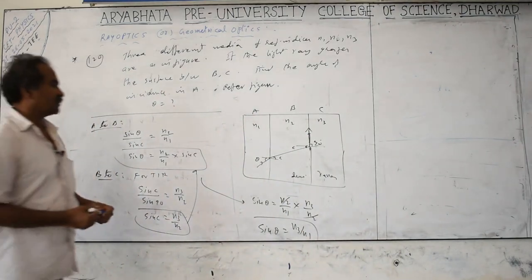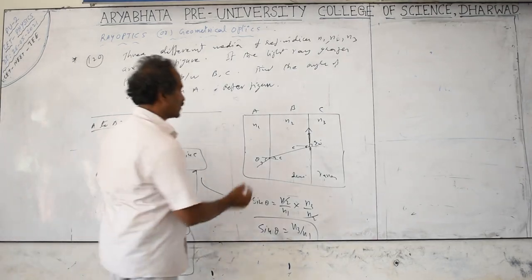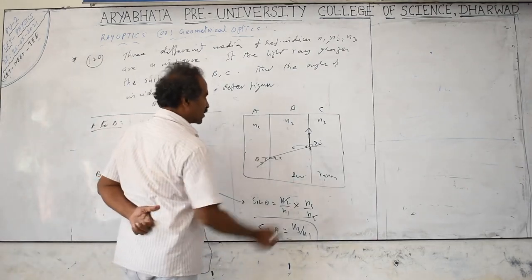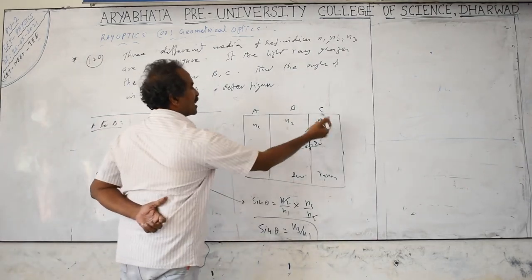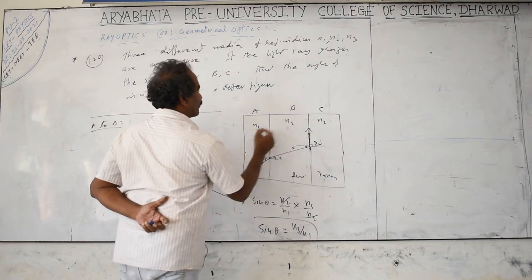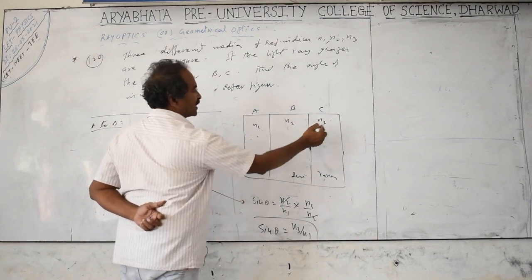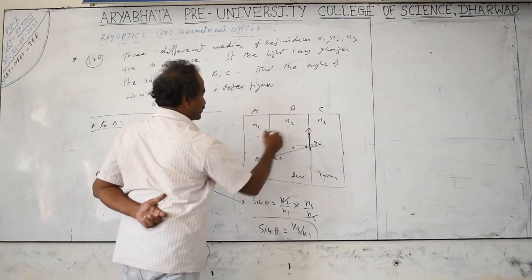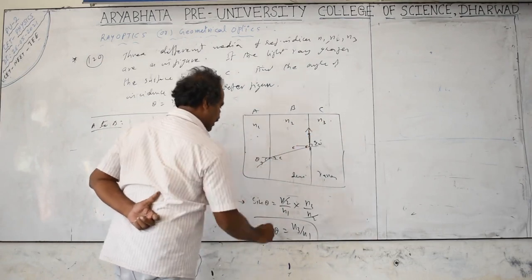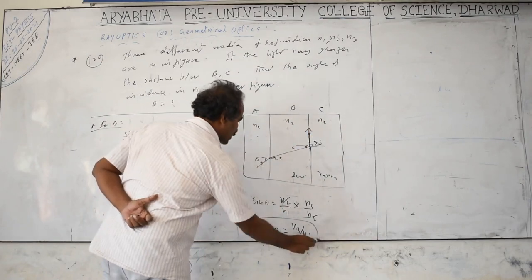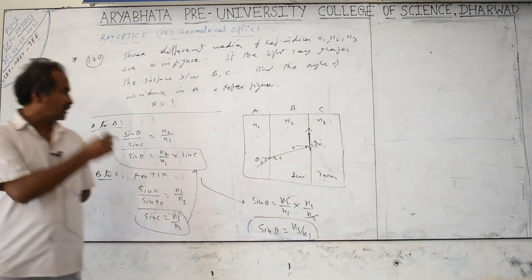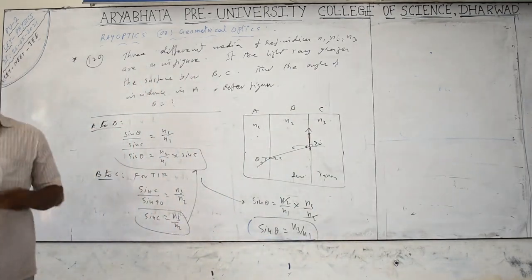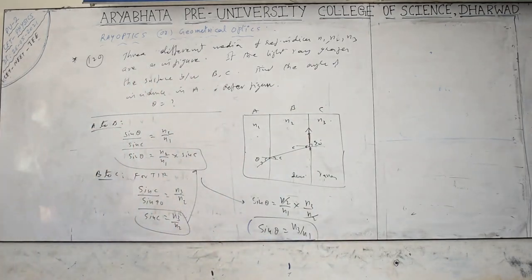Therefore sin θ = (n2 / n1) × (n3 / n2) = n3 / n1. The result is sin θ = n3/n1. The angle of incidence in the first medium depends only on the refractive indices of the last and first media. Remember this relation directly to save time in exams.